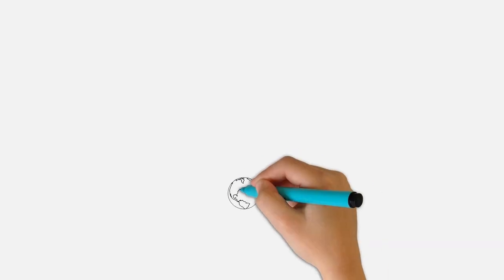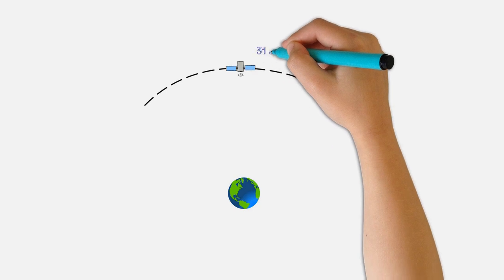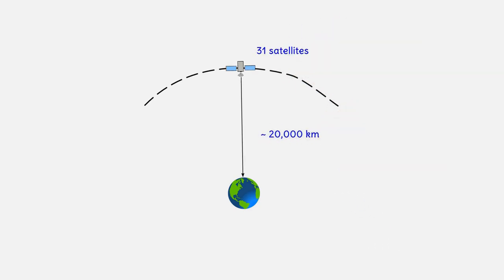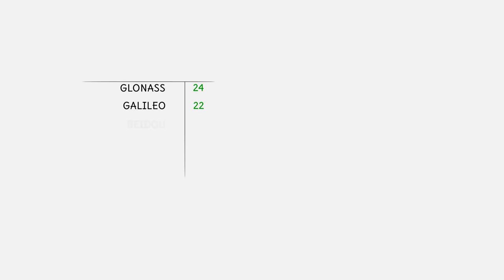GPS for example is a constellation of 31 satellites that fly at altitudes of roughly 20,000 kilometers above the earth surface, and the satellites orbit the earth every about 12 hours. Other GNSS have their satellites in orbits as well, which means that more than 120 GNSS satellites are in orbits today.